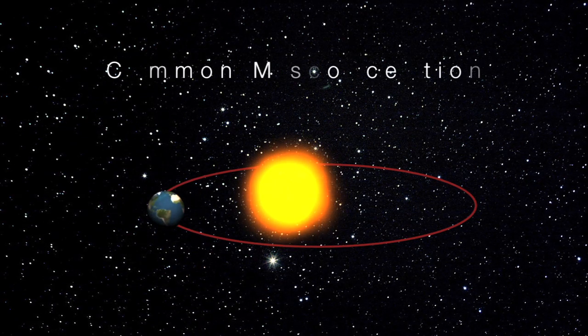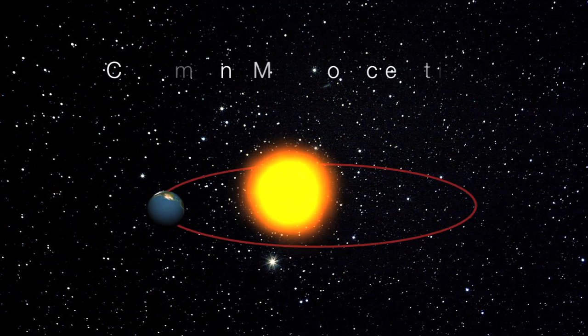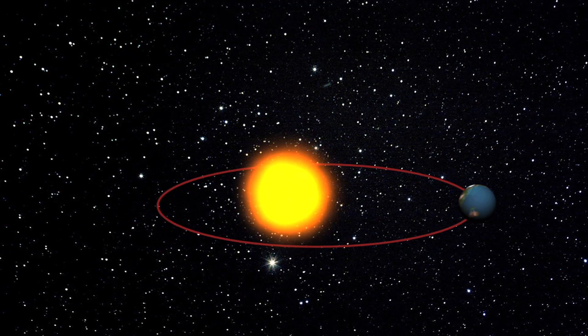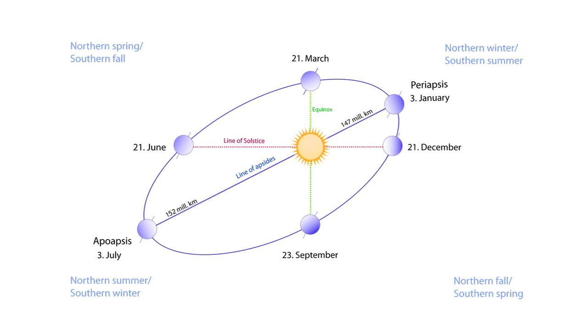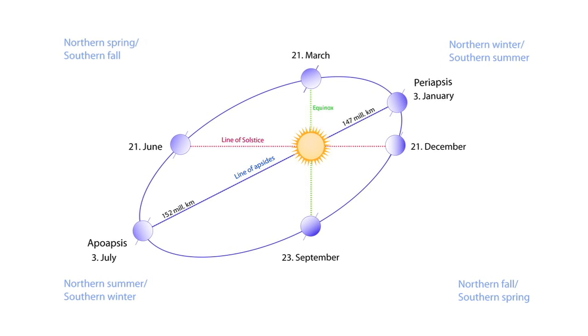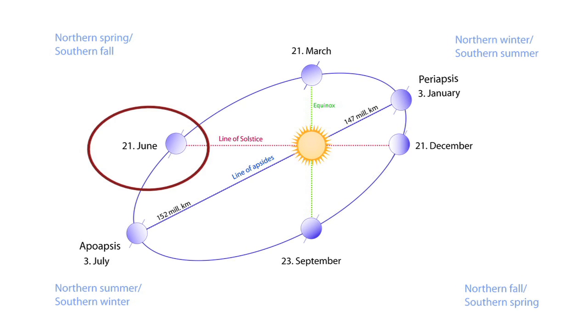The common misconception is that during the summer, the Earth is closer to the sun, and during the winter, the Earth is further away. While this isn't true, it makes sense because if you move your hand closer to a flame, it gets warmer. However, because the Earth's orbit is an ellipse, the Earth is actually further away from the sun during June and July, the northern hemisphere summer. So that can't be the reason.